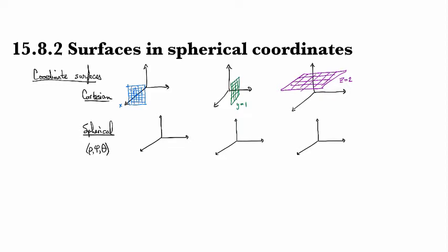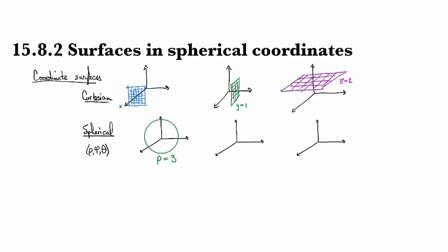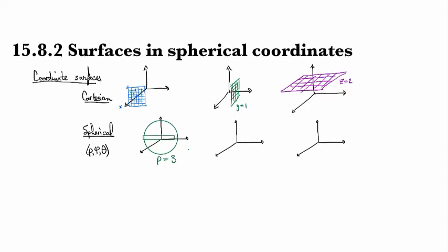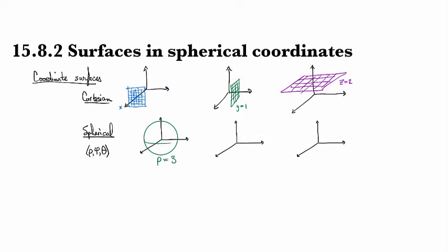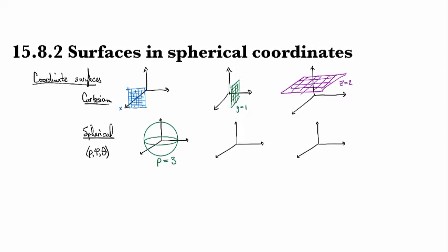If we were to fix rho equals 3 or something like that, we're looking at all points that are distance 3 from the origin, and that's going to form a sphere. There we go, perfect sphere. So that's what it looks like when rho is fixed equal to a constant.